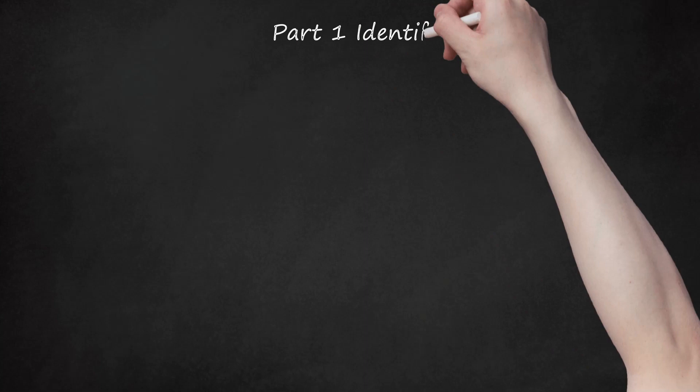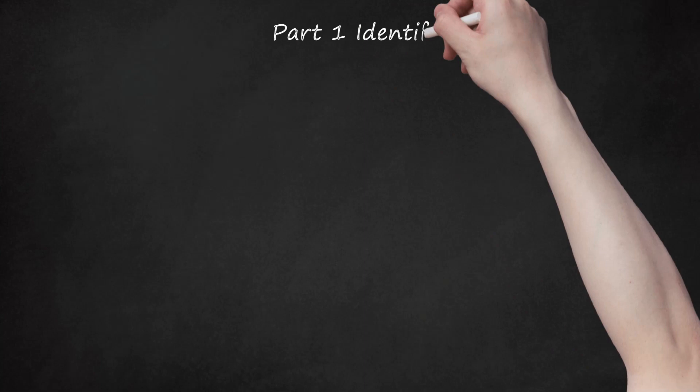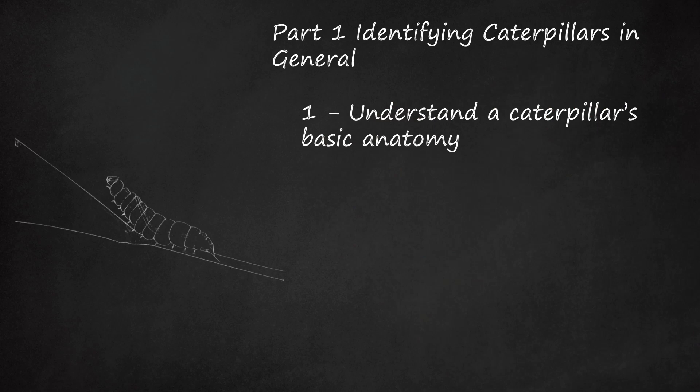Part 1: Identifying Caterpillars in General. Understand a caterpillar's basic anatomy. Although a caterpillar's body may look like that of a worm, it can be divided into the same three parts as the insect it will become as an adult. The head features two sets of six simple eyes and sharp, powerful jaws that can tear up the leaves it eats into small, edible pieces. A spinneret on the lower lip exudes a silk that can be used to support the caterpillar and to spin the cocoon it enters to metamorphose into an adult.